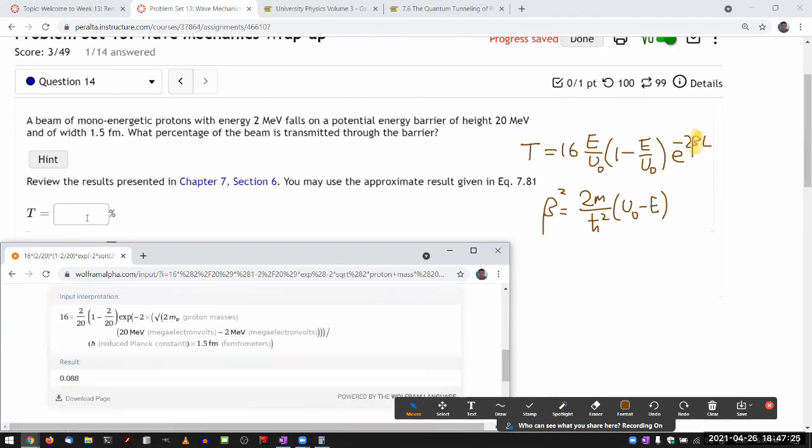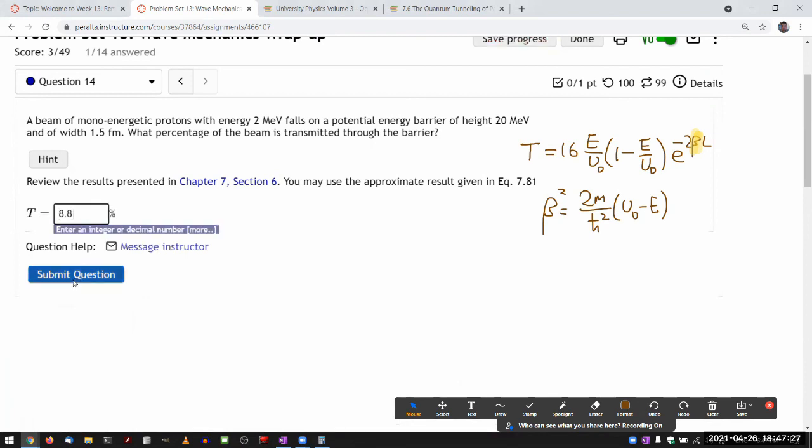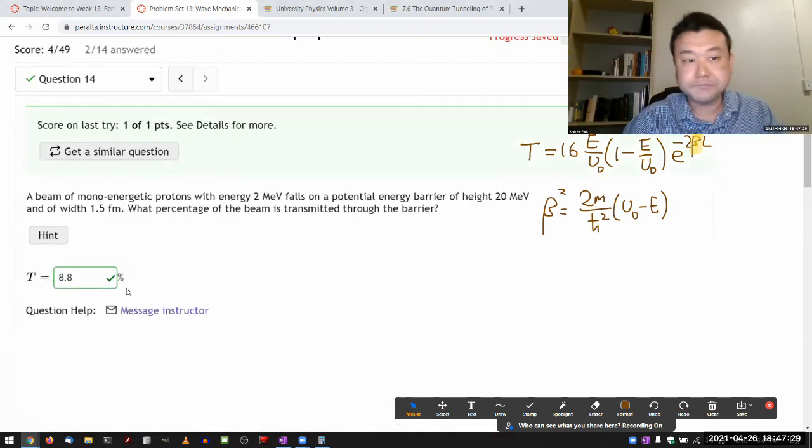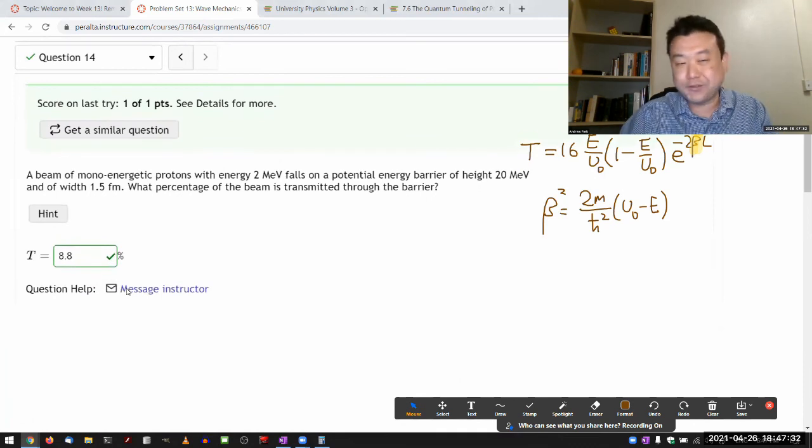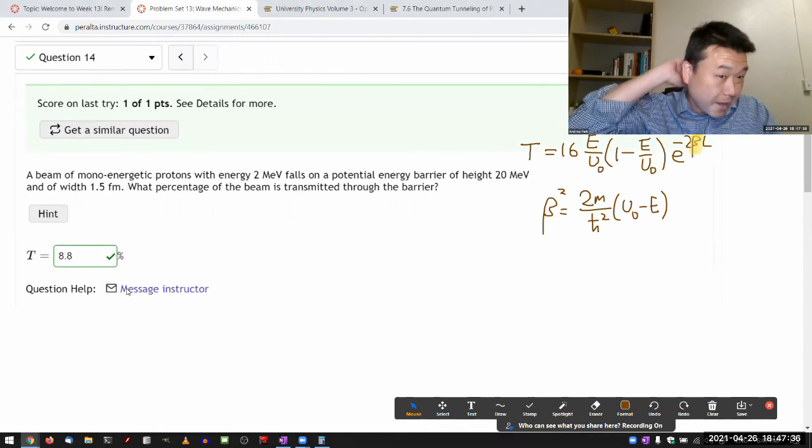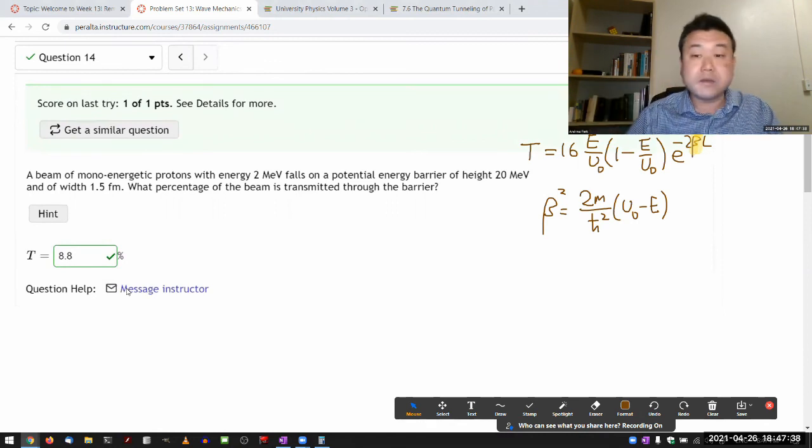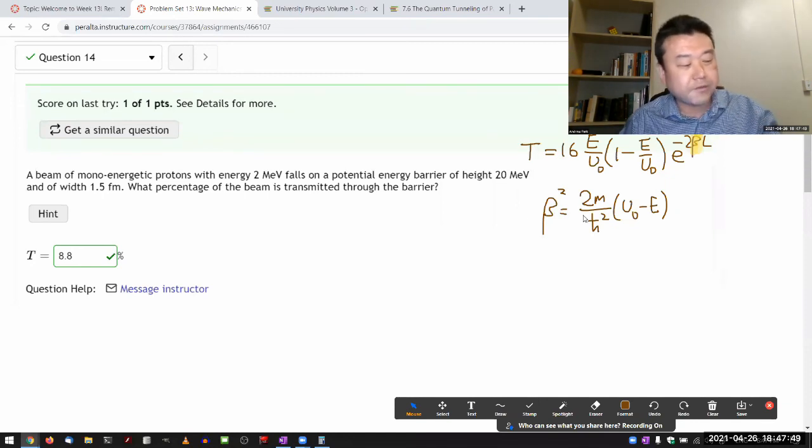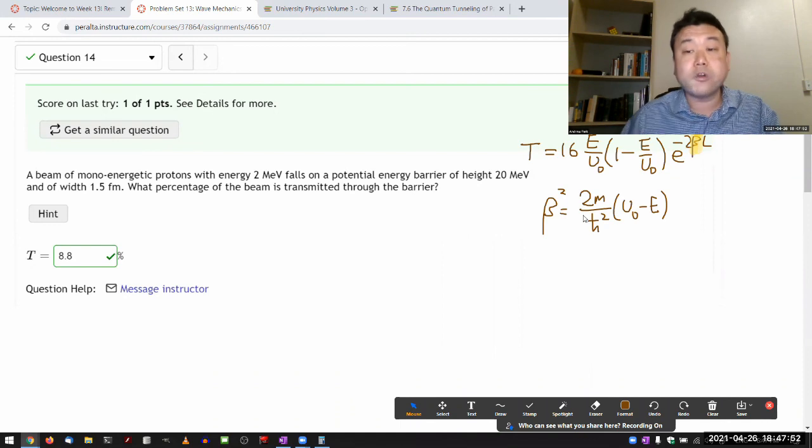So in percentage terms, it should be 8.8%. So again, easy question, because all you have to do is plug in the numbers. But this is why I asked question 12, because I fully believe everyone in the class is capable of looking up the formulas and then plugging the numbers. What I feel like you might miss out on is gaining some level of intuition for this tunneling phenomenon, if that's all that you have to do.